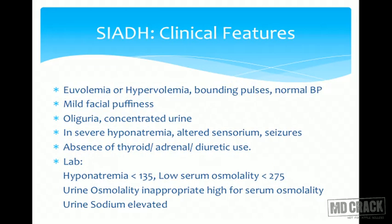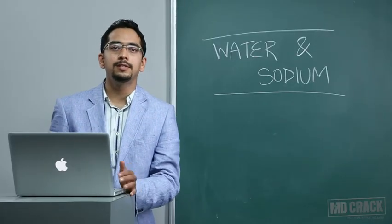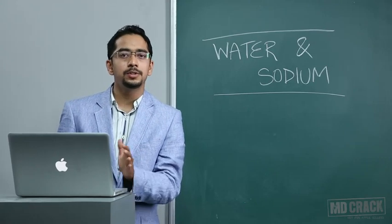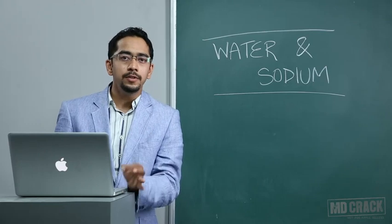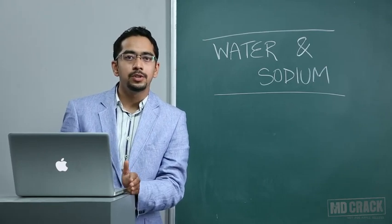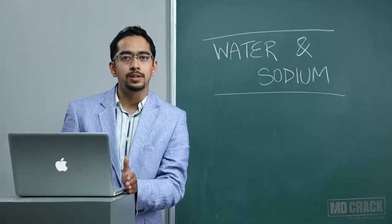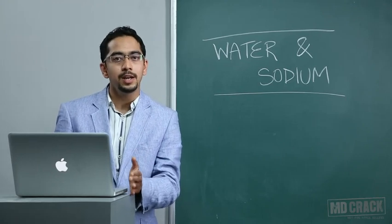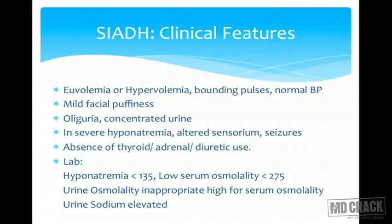Clinical features: hypovolemia, bounding pulses, mild facial puffiness, and the key feature is oliguria and concentrated urine. Please remember there is another entity, cerebral salt wasting. These patients also have hyponatremia and CNS injury, but the differentiating feature is in SIADH you have oliguria while in cerebral salt wasting you have polyuria. The volume status in SIADH is normal whereas in cerebral salt wasting they are dehydrated and hypovolemic.